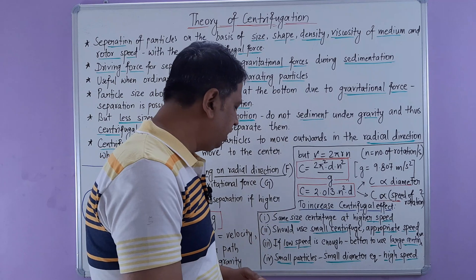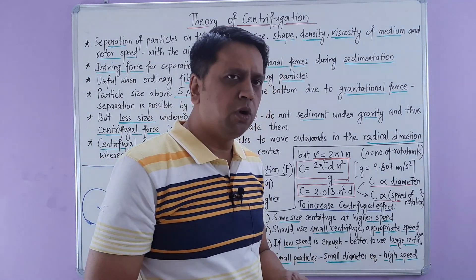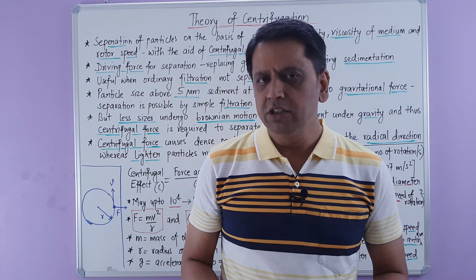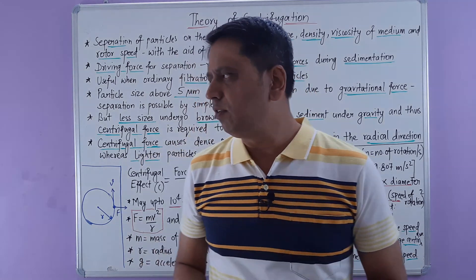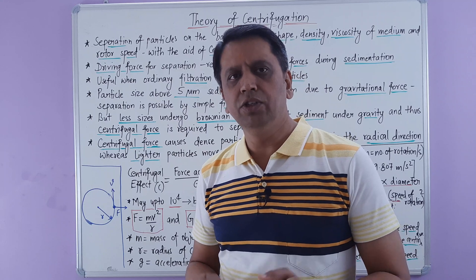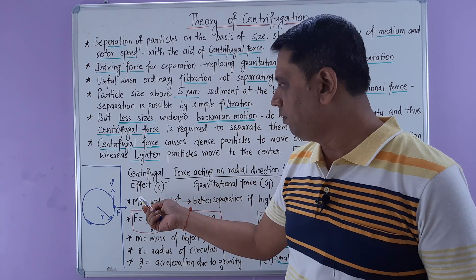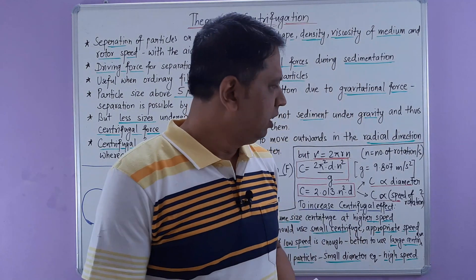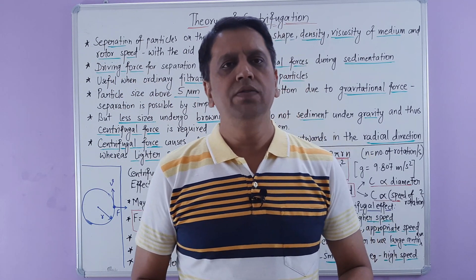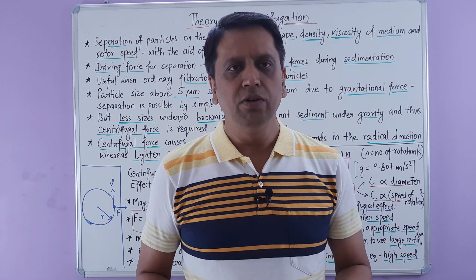If the batch size is large and lower speed is sufficient for separation, using a bigger centrifuge is preferable. Additionally, for small particles we can use a small centrifuge of smaller diameter operated at higher speeds. To summarize, we covered the definition of centrifugation, compared it with filtration, discussed the centrifugal effect and its mathematical equation, and strategies to increase centrifugal effect. Hope you liked the video — please share with your colleagues. Thank you friends.